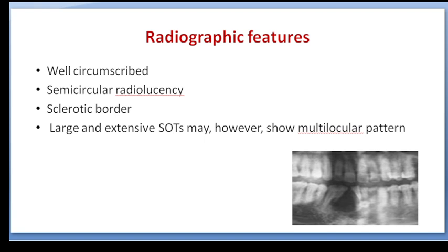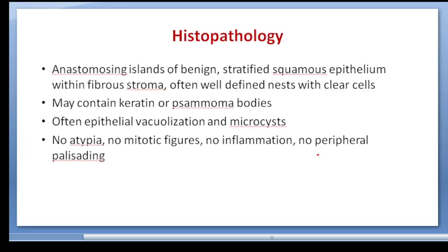Very rarely, large and extensive squamous odontogenic tumors are seen. Histopathologically, islands of benign stratified squamous epithelium are seen within a well-defined fibrous stroma. This tumor may contain keratin or calcifications.